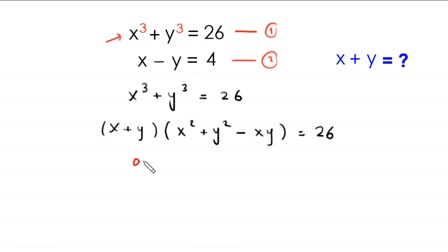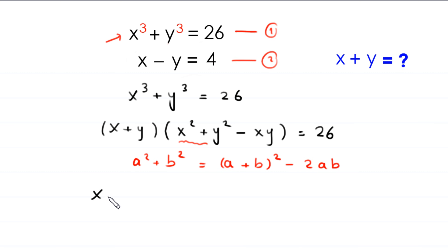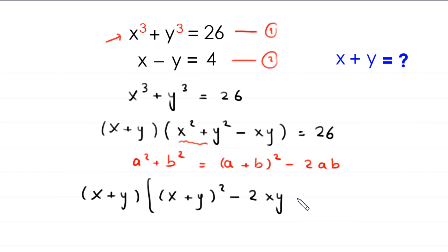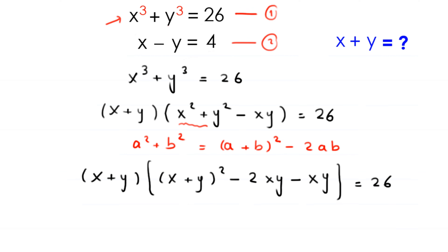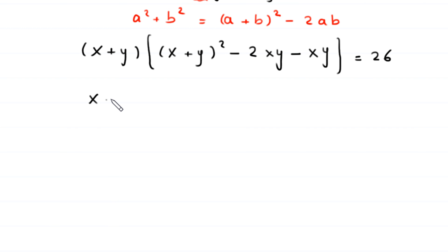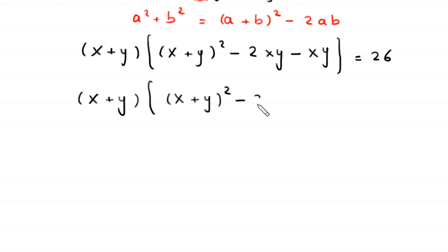Now, by using the algebraic identity a squared plus b squared equals a plus b whole squared minus 2ab, we can rewrite x squared plus y squared. This expression becomes x plus y times x plus y whole squared minus 2xy minus xy, which gives x plus y times x plus y whole squared minus 3xy, equal to 26.